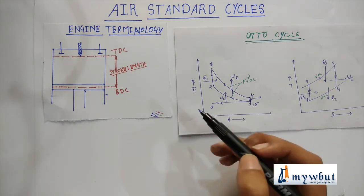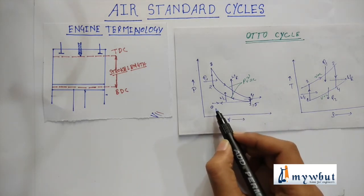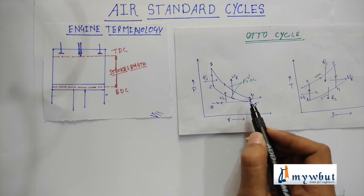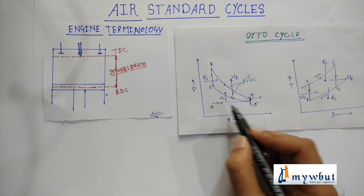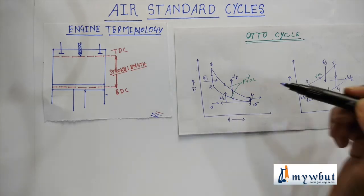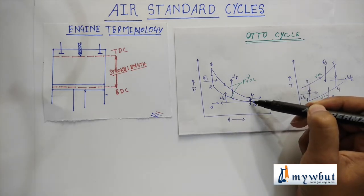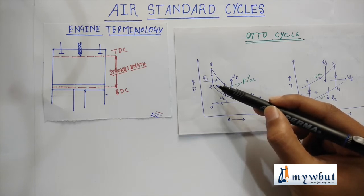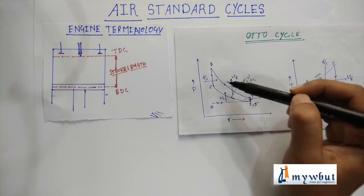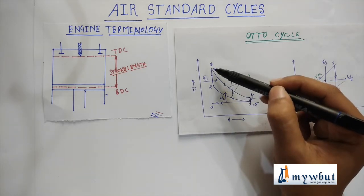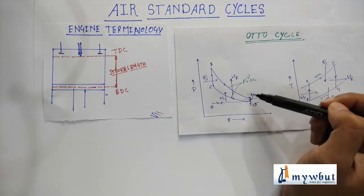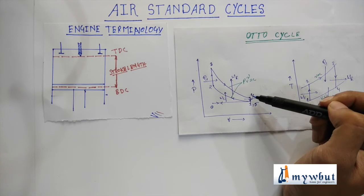As I have marked, the process 0 to 1 is known as the intake process. The process 1 to 2 is known as the adiabatic compression process. The process 2 to 3 is the heat addition or combustion process. The process 3 to 4 is known as the expansion process.